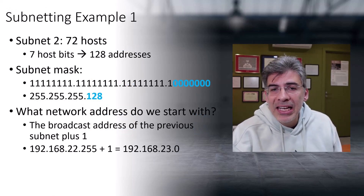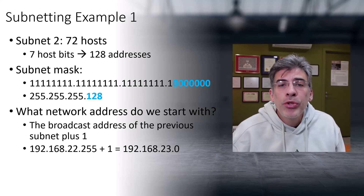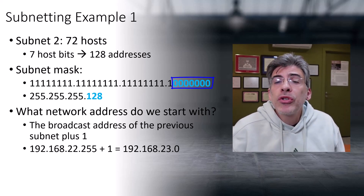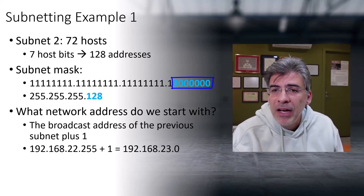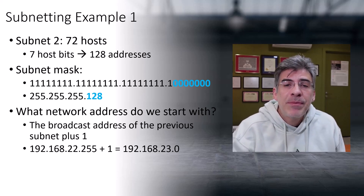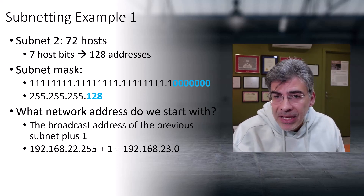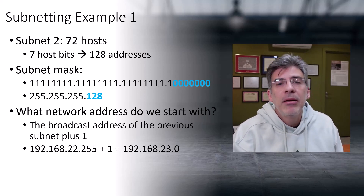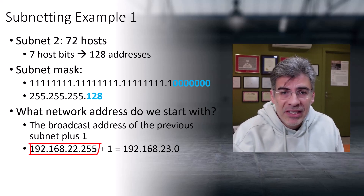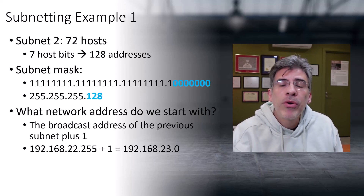For subnet number two, we need to accommodate 72 hosts, so we use a subnet mask with seven host bits for a total of 128 addresses. That gives us a subnet mask of 255.255.255.128. The network address of this subnet is the broadcast address of the previous subnet plus one. The previous subnet's broadcast address was 192.168.22.255, so adding one gives us 192.168.23.0 as the network address for subnet number two.